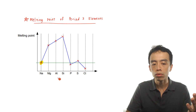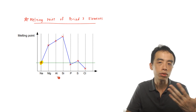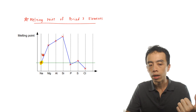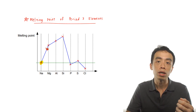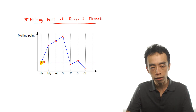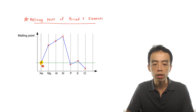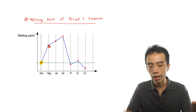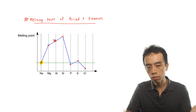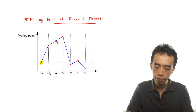From sodium to magnesium to aluminum, we would expect an increase in melting point. From sodium to magnesium, the increase in melting point is a lot more significant, so I draw a steeper gradient here. From magnesium to aluminum, the melting point increases, but it is not as significant.